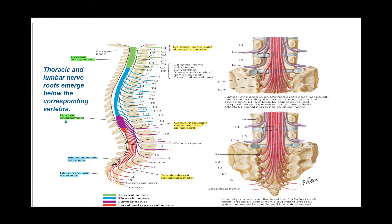We also have the lumbar enlargement around T11, T12, L1. And then we have the conus medullaris, which is the termination of the spinal cord, at approximately L1-L2 — usually L1.